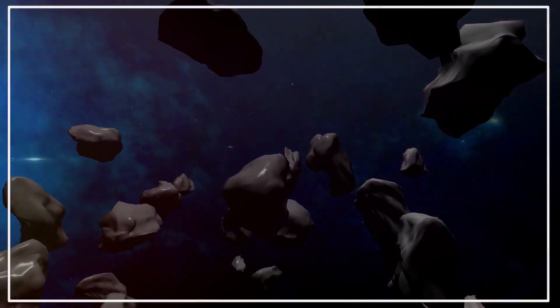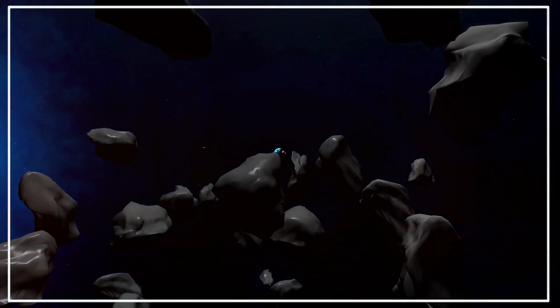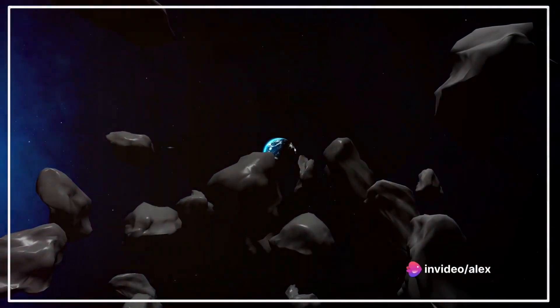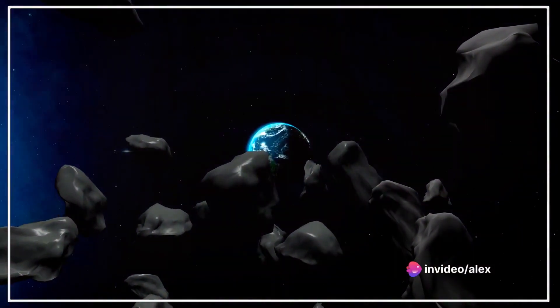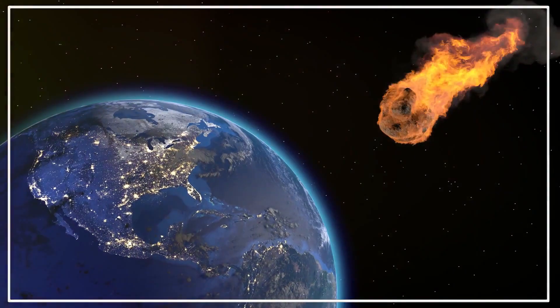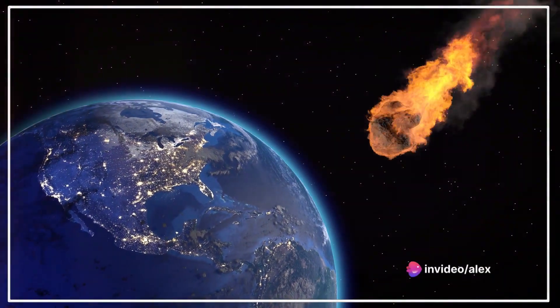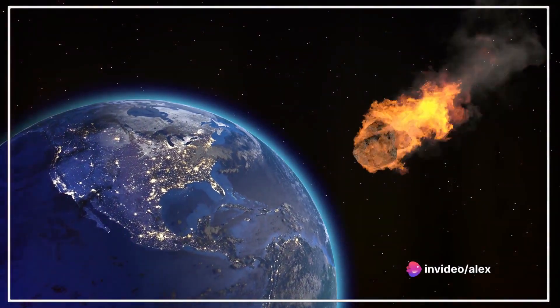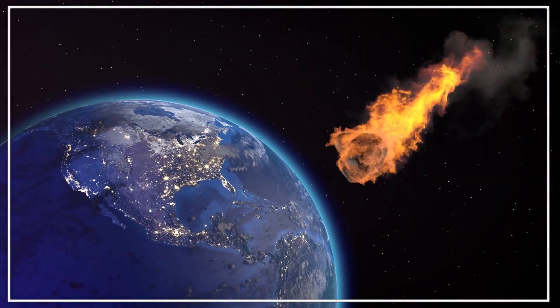But the asteroid's wrath wouldn't stop there. The impact could also have profound effects on Earth's orbit and rotation. Currently, our planet spins on its axis once every 24 hours and orbits the sun once every 365 days. But a sufficiently powerful impact could change that.